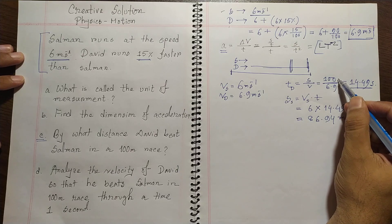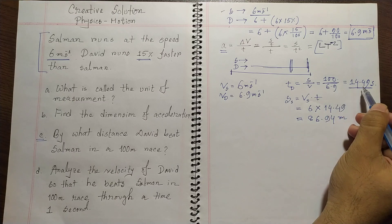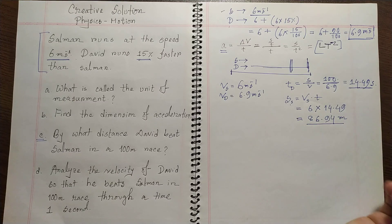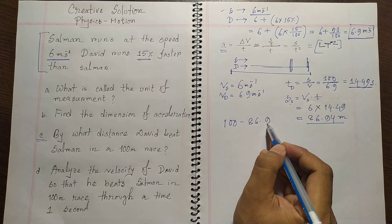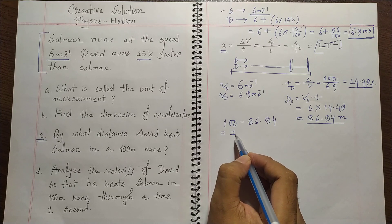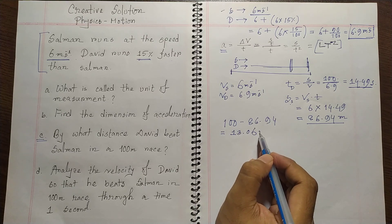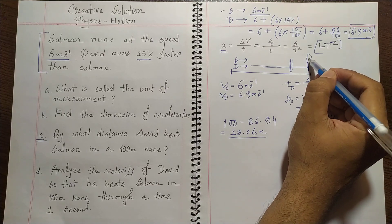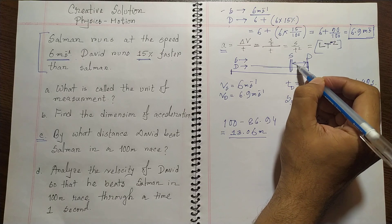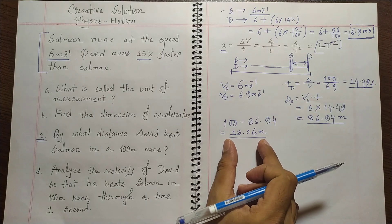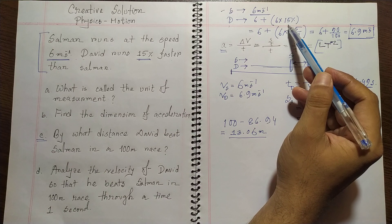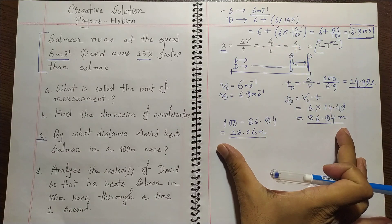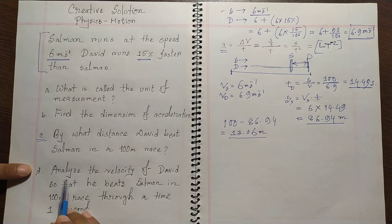David takes 14.49 seconds to complete 100 meters. Within this same time, Salman only completes 86.94 meters. The difference between David and Salman is 100 minus 86.94 meters, which equals 13.06 meters. So David beats Salman by 13.06 meters. We found David's speed using the given data and solved it simply.